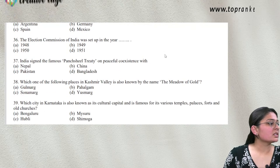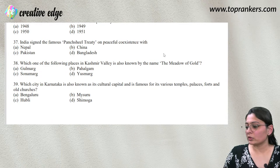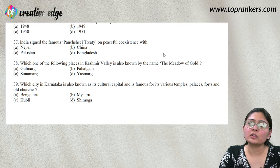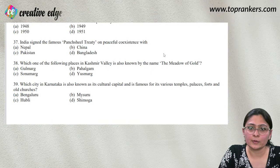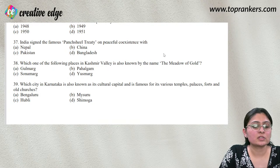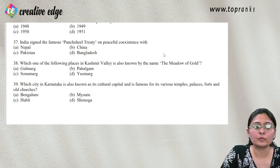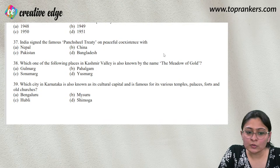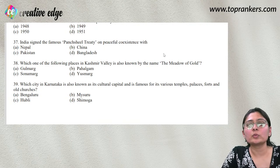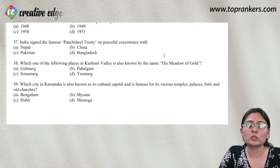Question 37: The Election Commission of India was established on January 25th, 1950. January 25th is celebrated as National Voters Day in India to commemorate this establishment.